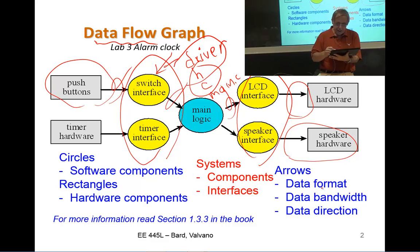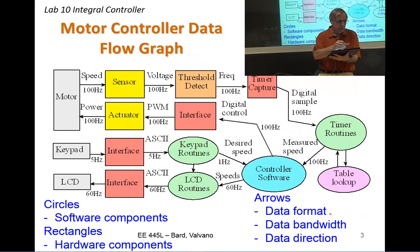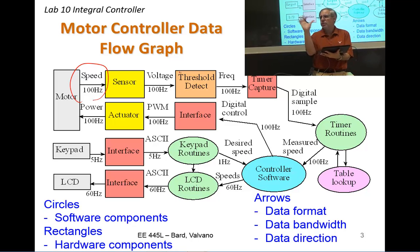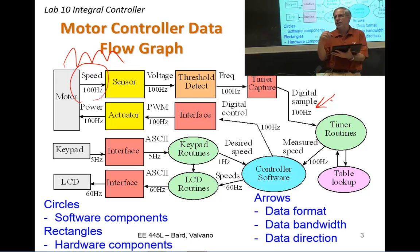The other thing about the arrow is it is data. We can put more information on the arrow to specify what that data is, what type is it, and the bandwidth or the amount of information flowing per second. We'll use bandwidth in this class in two categories. When we talk about an analog signal, we'll use bandwidth to say that the information exists between certain frequency components. We'll also use bandwidth in a digital sense, which will be the number of bits per second, the number of bytes per second, the number of samples per second.